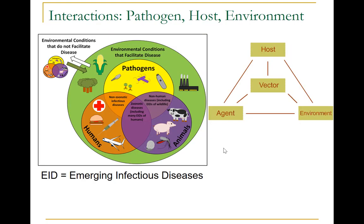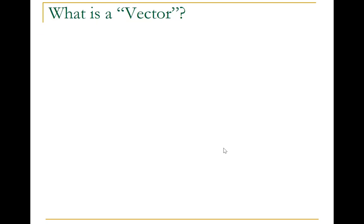The disease triangle represents a simple concept: in order for disease to occur, the parasite must be present, a susceptible host must be present, and environmental conditions must be sufficient to result in pathology. If you remove one side of the triangle, there will be no disease. The diagram shows the interaction among pathogen, host, and environment, with a vector shown in the center to indicate that diseases can also be transmitted with the help of vectors.